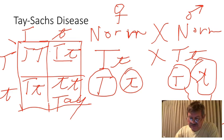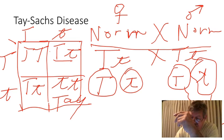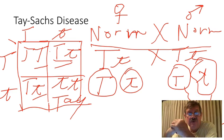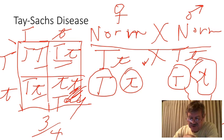Looking at probability: the probability of a child from this couple being normal is three out of four — three-quarters. The probability of a child having Tay-Sachs disease is one out of four — one-fourth.